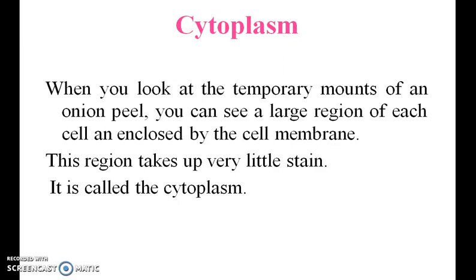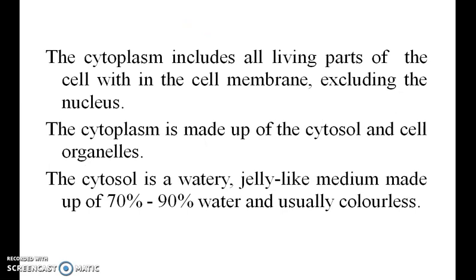Cytoplasm: when you look at a temporary mount of an onion peel, you can see a large region of each cell enclosed by the cell membrane. This region takes up a very little stain and is called cytoplasm. The cytoplasm includes all living parts of the cell within the cell membrane, excluding the nucleus. It is made up of cytosol and cell organelles. The cytosol is a watery, jelly-like medium made up of 70 to 90 percent water.